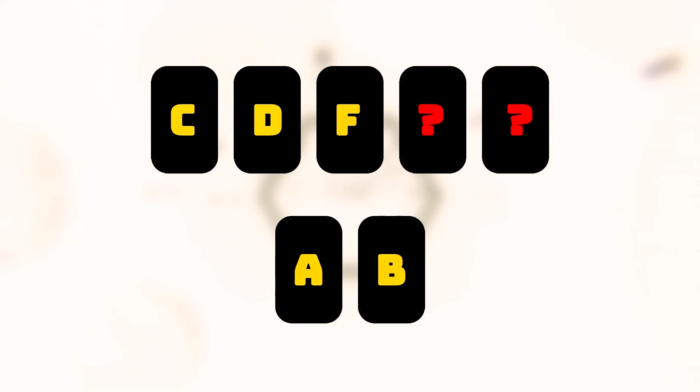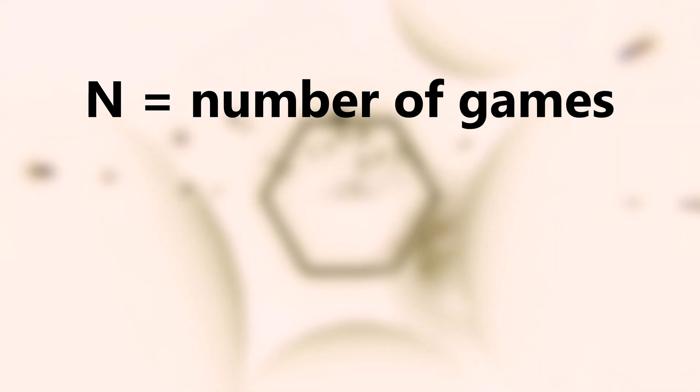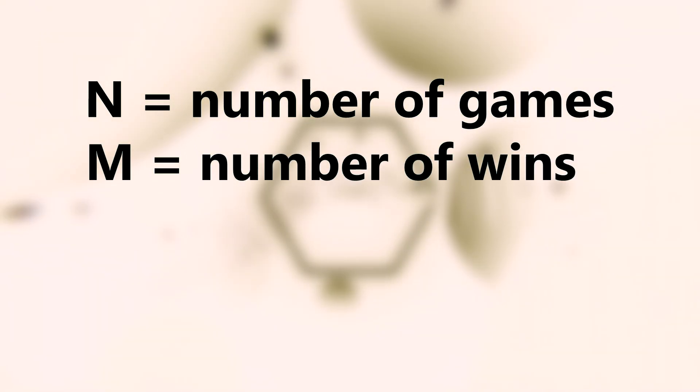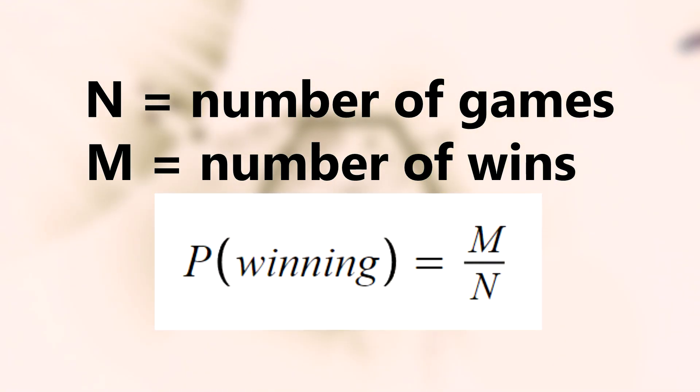Finally, we determine the winner of each simulated game. After running N such simulations, let's say you won M games. The probability of winning from a given position in Poker is then calculated as M over N.